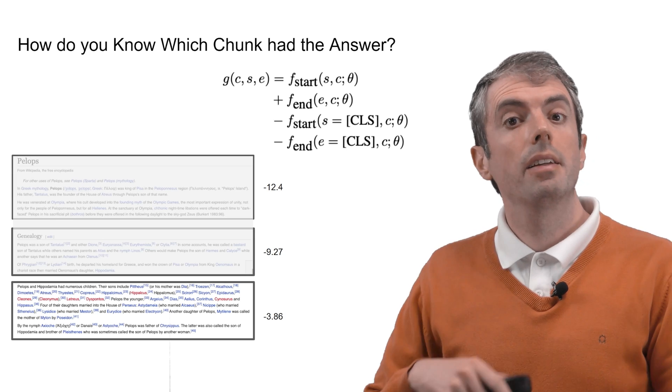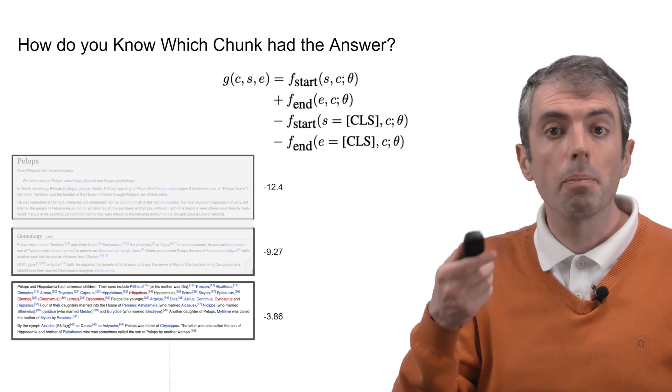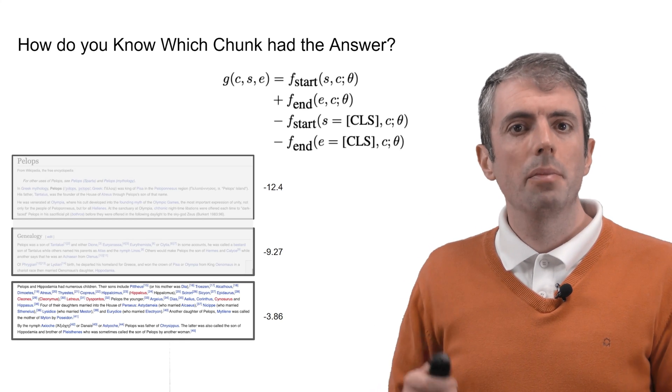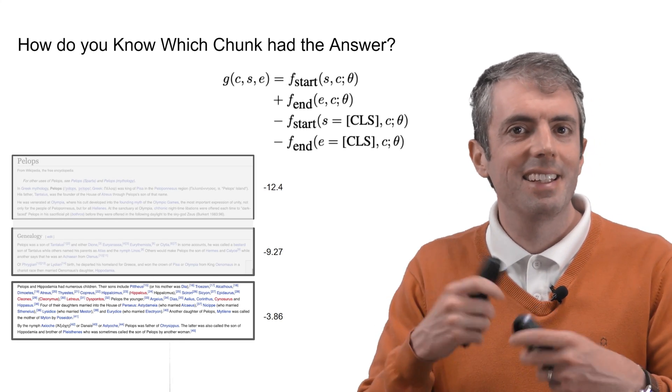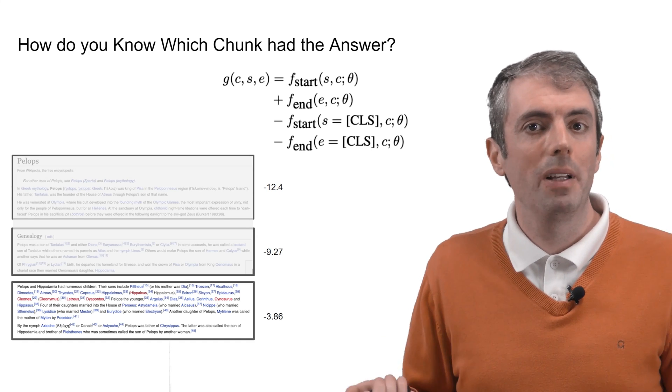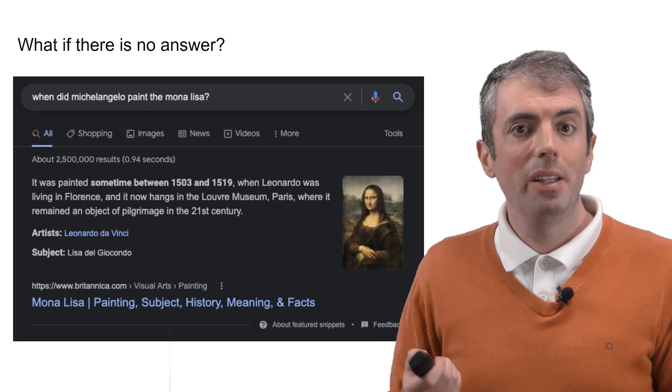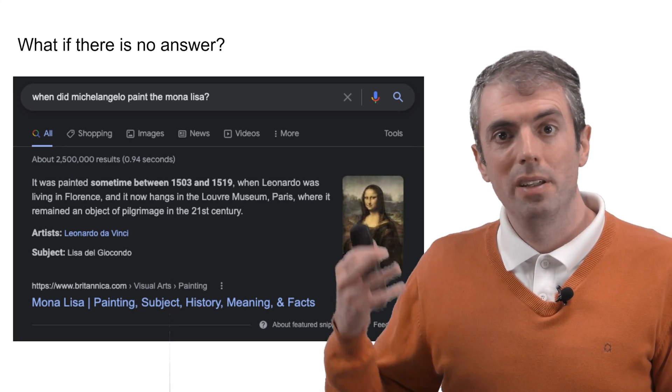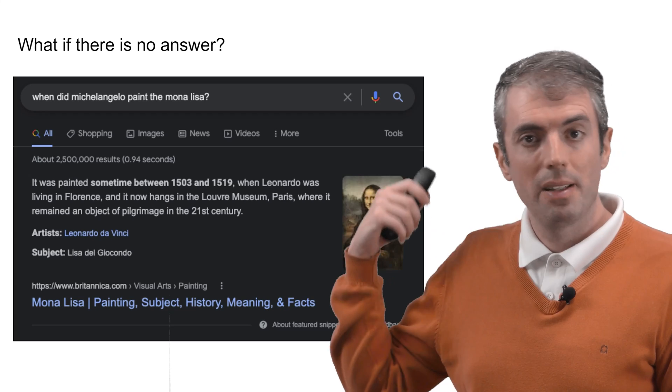There are fancier things that you could do. For example, you could train a separate classifier to decide whether you should answer at all. This is sometimes called abstaining and I think it's a particularly undervalued part of question answering. Sometimes you don't want to answer a question at all, particularly when the answer could be embarrassing or if the question makes a false presupposition.